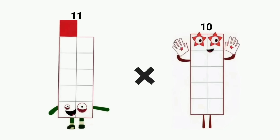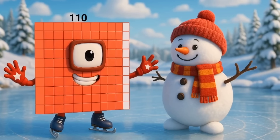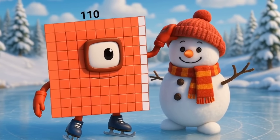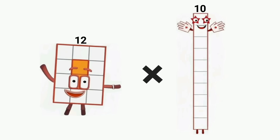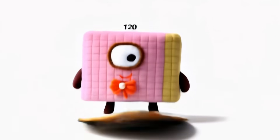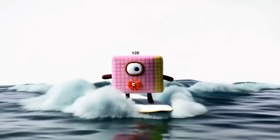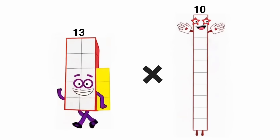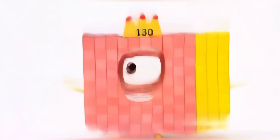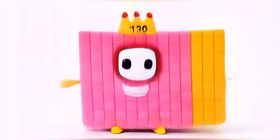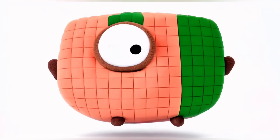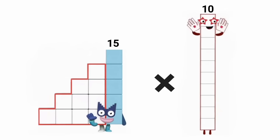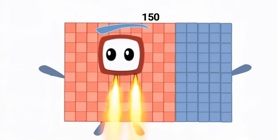Eleven times ten equals one hundred and ten. Twelve times ten equals one hundred and twenty. Thirteen times ten equals one hundred and thirty. Fourteen times ten equals one hundred and forty. Fifteen times ten equals one hundred and fifty.